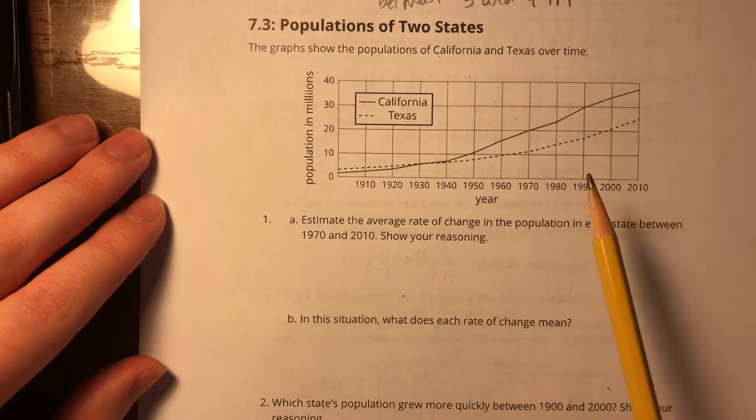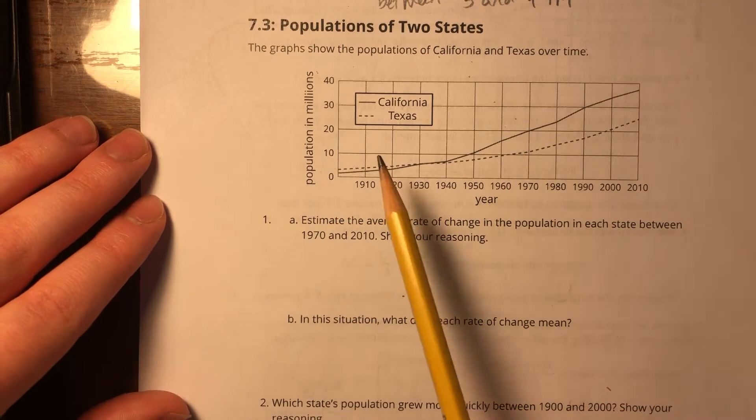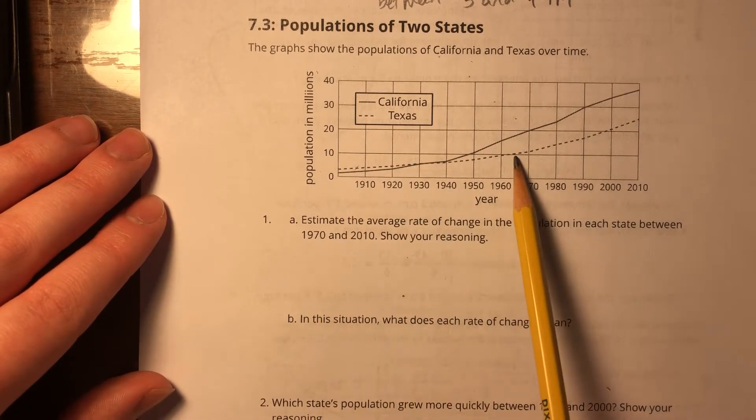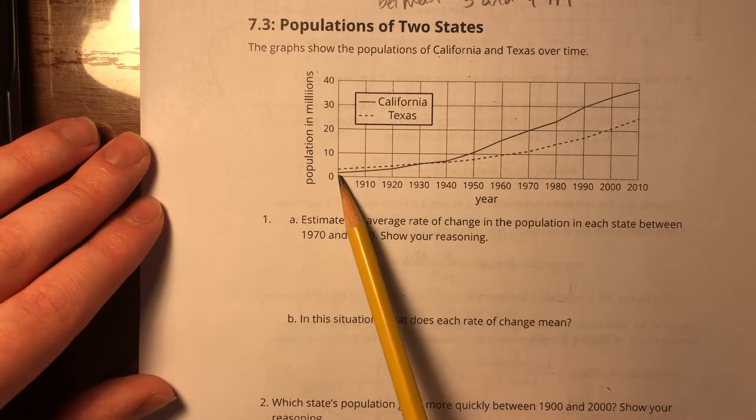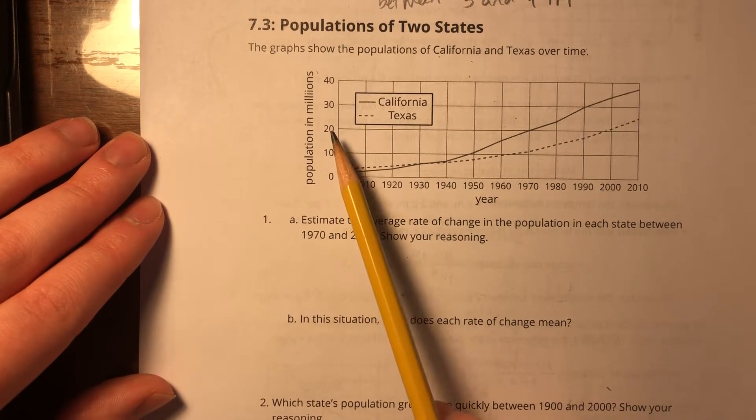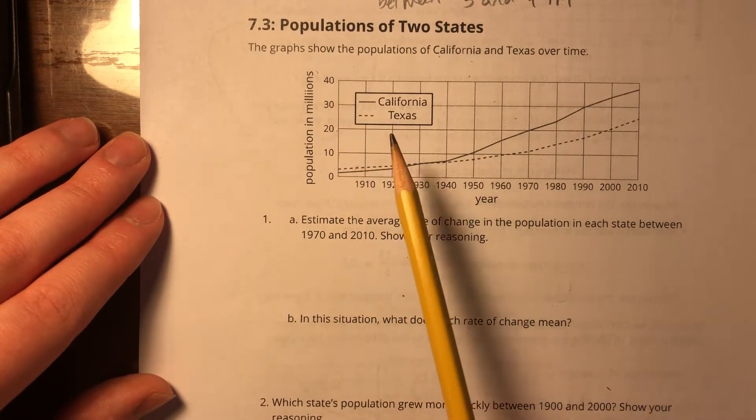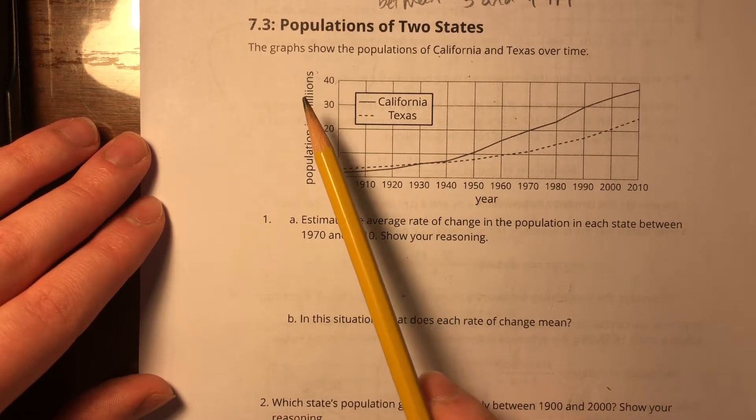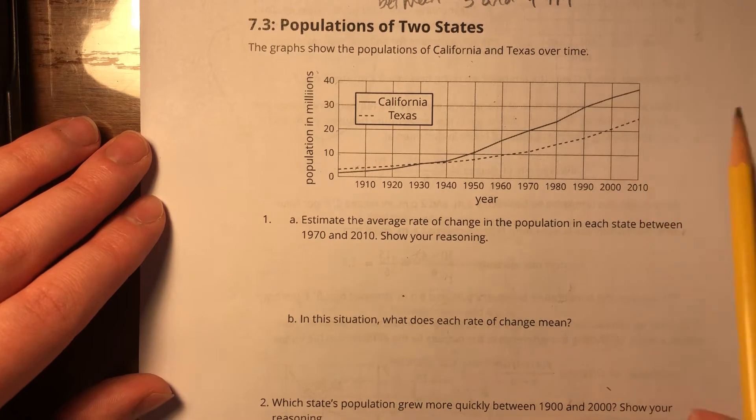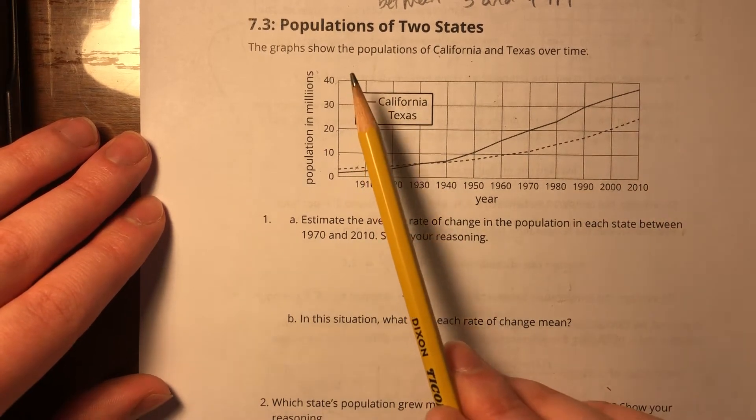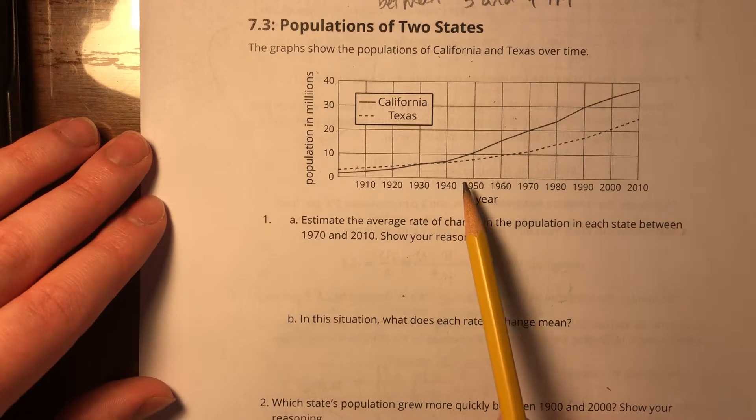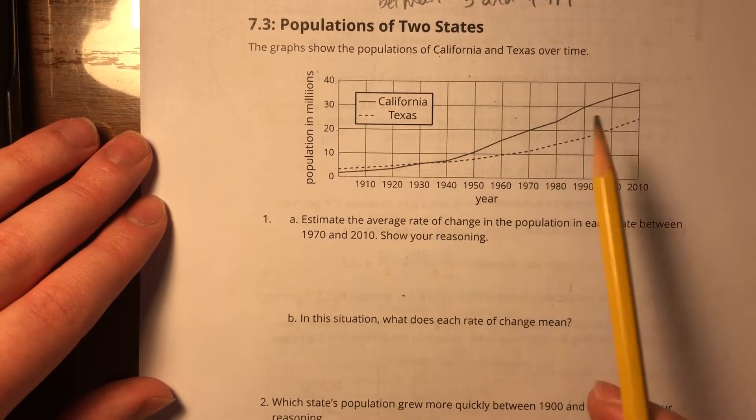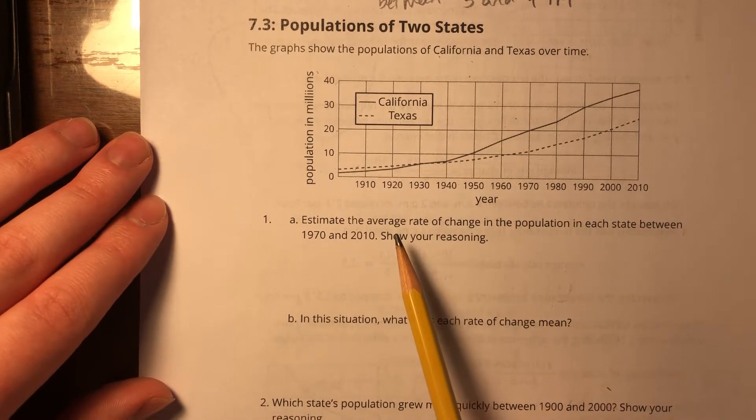They're telling us to estimate because it's very difficult to get an exact number. This is 0 to 10 million, to 20 million, to 30 million, to 40 million. I know it's 40 million because it says population in millions. It would be kind of crazy if the populations of California and Texas were less than 40 people. We've got our years going up by decades, so we can't really find an exact number.